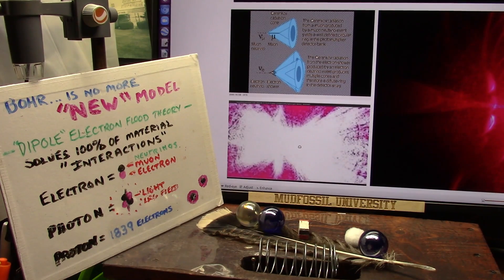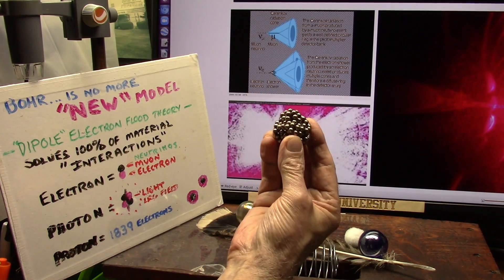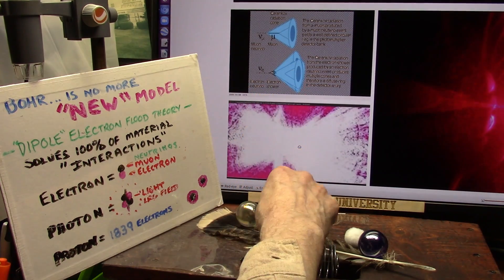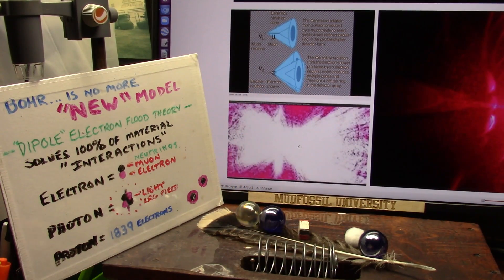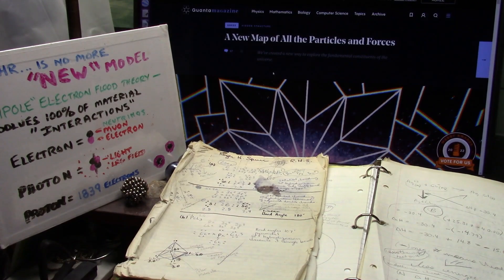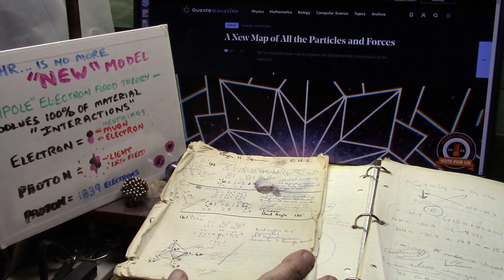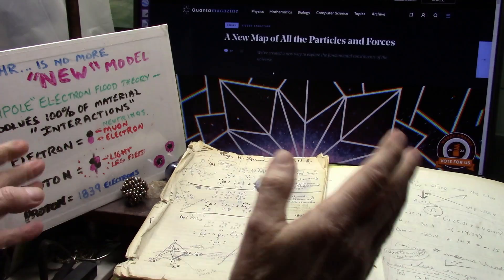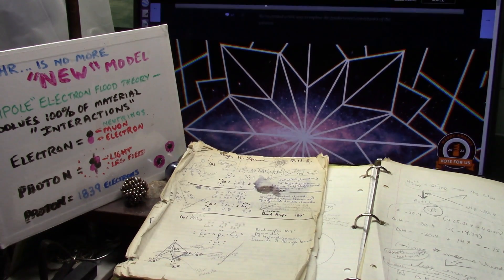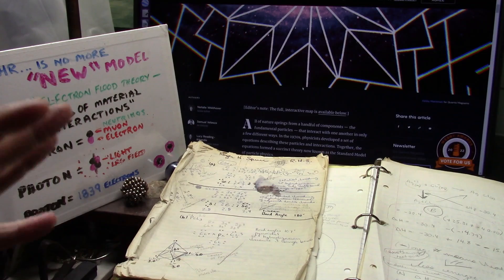And it completely changes the atomic structure, because everything is dipoles. 1,839 particles make up one proton. Not one gigantic big proton. No. Not how it works. I'd say that's a pretty big discovery. Okay, my friends. They all know the Bohr model is not correct. So, they're coming up with all kinds of different ways to try to justify it.